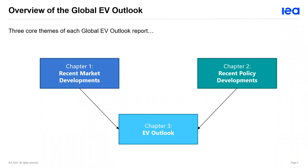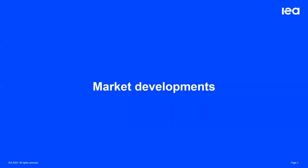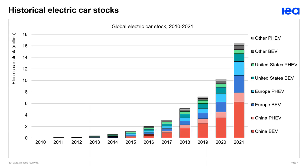Starting with market developments, one of the key figures we present is on global stock of electric cars, showing how that's growing year by year. We differentiate between battery electric and plug-in hybrid electric cars, and present this data by region — thus far focusing on the three major EV markets: China, the EU, and the U.S. Within the report we do comment on notable growth in countries that fall into the 'other' category, which is growing and becoming more important for the narrative.